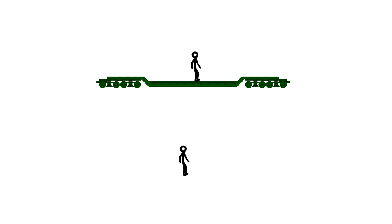But how does this all look to the person on the train? In his reference frame, he is not moving forward. The person on the ground is moving backward.